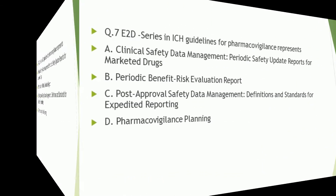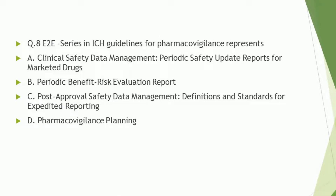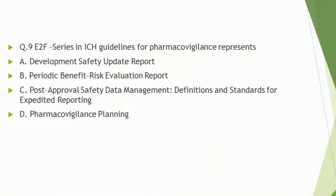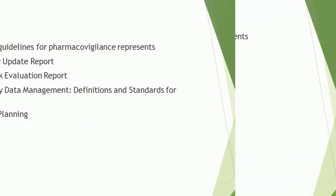Question number 8: what does the E2E series in ICH guideline for pharmacovigilance represent? The correct answer is: pharmacovigilance planning. Question number 9: what does the E2F series in ICH guideline for pharmacovigilance represent? The correct answer is: development safety update reports.